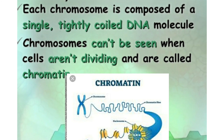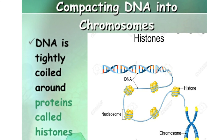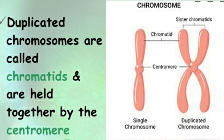Each chromosome is composed of a single tightly coiled DNA molecule. When cells aren't dividing, chromosomes cannot be seen and are called the chromatin network. The DNA is tightly coiled around proteins called histones. Duplicated chromosomes are called chromatids and are held together by the centromere.